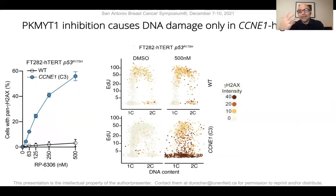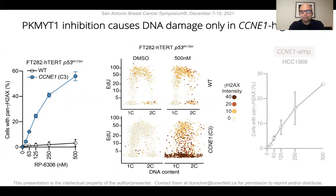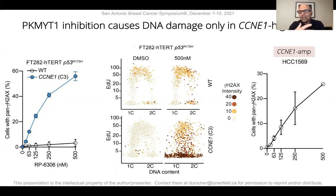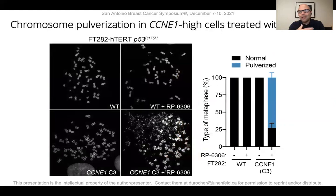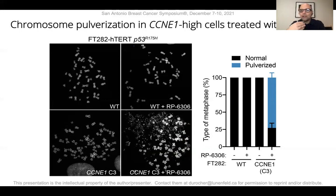Thirdly, this unscheduled mitotic entry has consequences for genome stability, as we see evidence of catastrophic DNA damage detected by phosphorylation of histone H2AX, a common marker of DNA damage. This is not limited to our engineered cell lines; we also see it in tumor-derived cyclin E-amplified cell lines. This DNA damage is also clearly visible in metaphase spreads, showing a phenotype called chromosome pulverization — characteristic of premature mitotic entry in replicating cells — and again only upon PKMYT1 inhibition in cyclin E1-high cells.